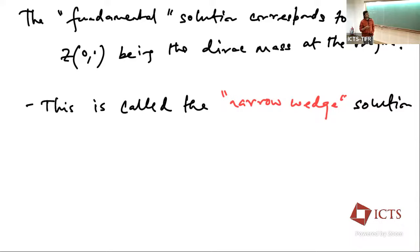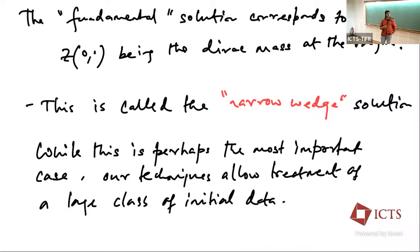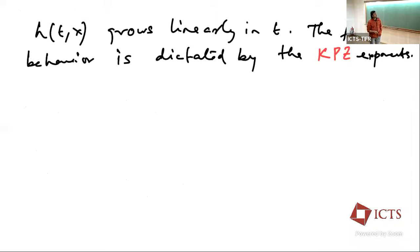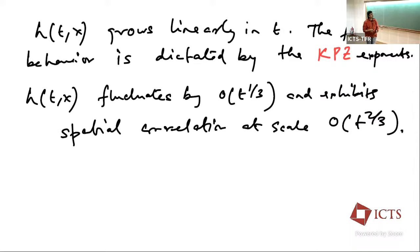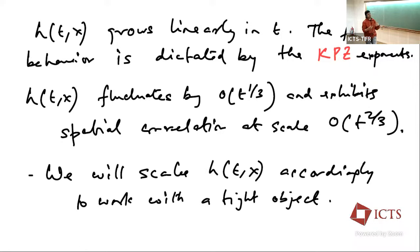The fundamental solution corresponds to the initial condition Z at time zero being the Dirac mass at the origin. This is known as the narrow wedge solution. The techniques we'll discuss will allow us to treat a large class of initial data. Some properties of the height function H: it grows linearly in time, and the fluctuation behavior is dictated by the KPZ exponents. At any given location, the value fluctuates with the leading order term linear in T and fluctuation of order T^{1/3}. The spatial correlation is seen at scales of order T^{2/3}.